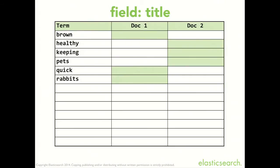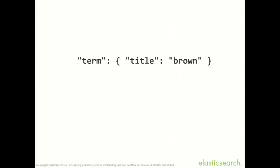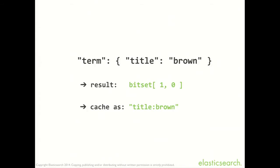How does this actually work? We go to the inverted index for the title field and look up the value in the sorted list. We find 'brown' — that gives us document one with a yes result, document two with a no. This term filter ends up with a result represented as a bit set — one bit for every document. Document one is true, document two is false. The nice thing is it's really small — you can represent lots of documents in a very small amount of space, so we can cache it. Here we cache it as 'title: brown.' The next time we run this filter it will reuse the cached value. These are smart caches — you don't have to think about expiring them. As soon as you index something new, the caches are updated.